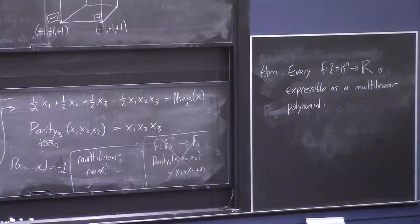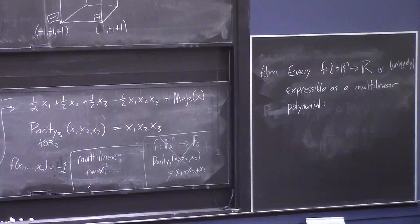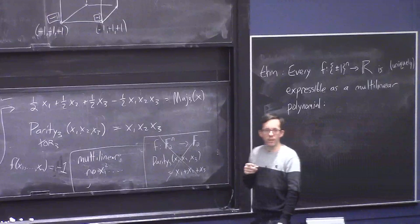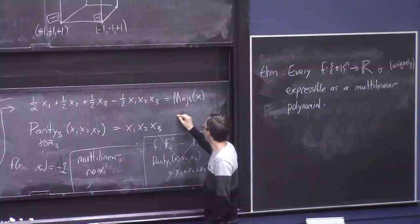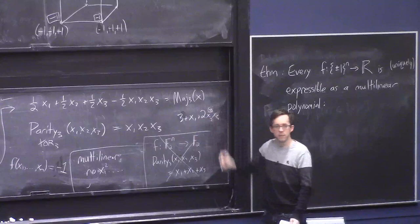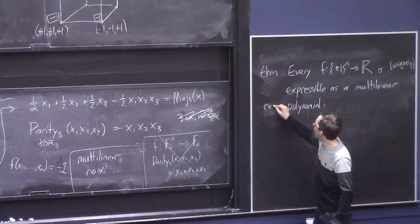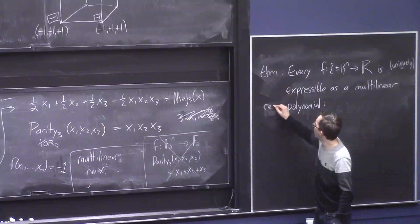I'll also throw in the word 'uniquely' — I haven't really proved that yet, but it will become clear by the end of the lecture. Multilinear means a polynomial where the highest power of any variable is 1, so like 3 + x1 + 2x1²x2x5² is not multilinear because of those squared terms. Also, I should add 'real' to the statement.